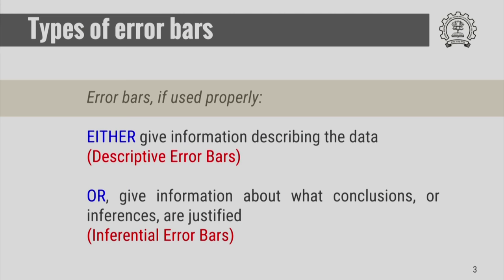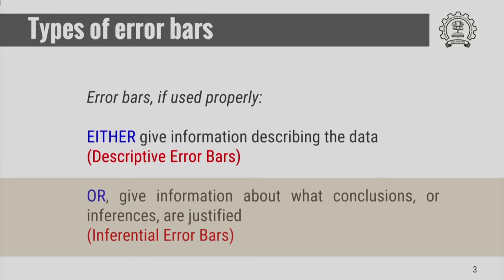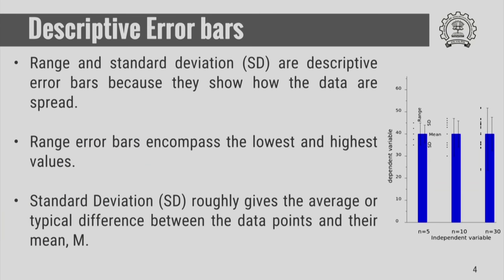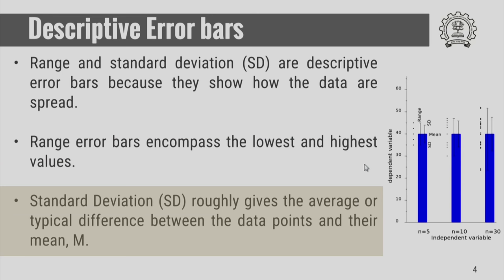Now let us talk about the types of error bars. Error bars, if used properly, either give you information describing the data — these are called descriptive error bars — or they give you information about what conclusions or inferences are justified, and those are called inferential error bars. Range and standard deviations are descriptive error bars because they show how the data is spread. Range encompasses the lowest and highest values, and standard deviation roughly gives you the average or typical difference between the data points and their mean.